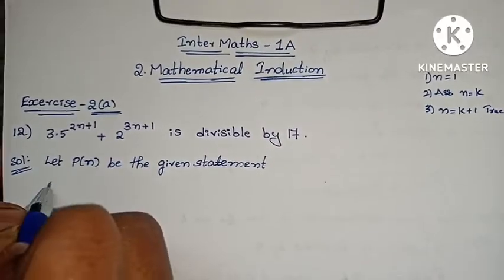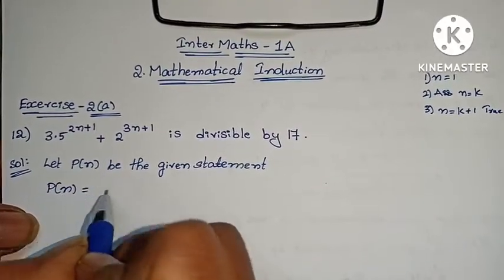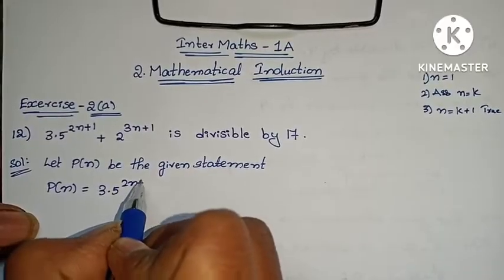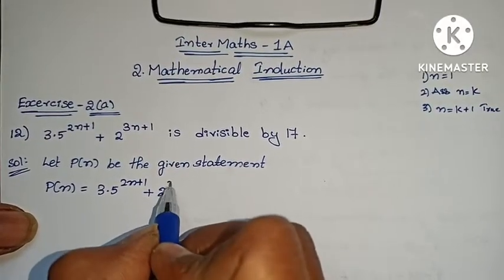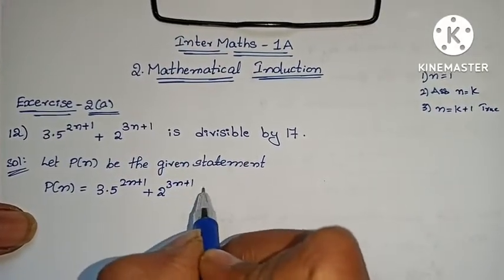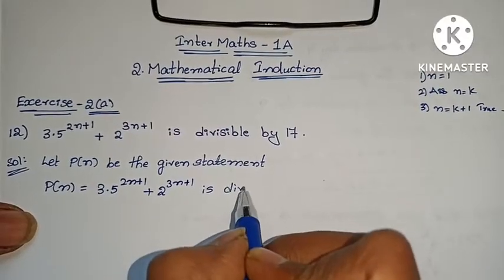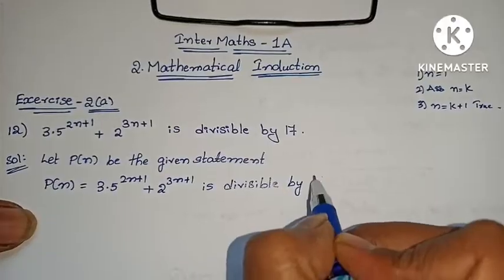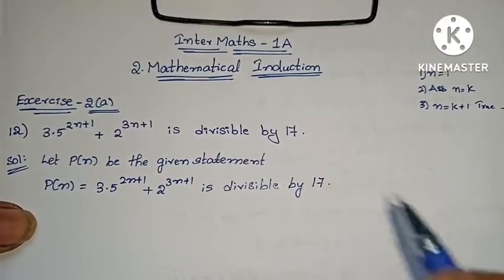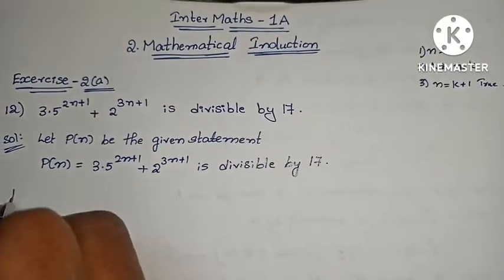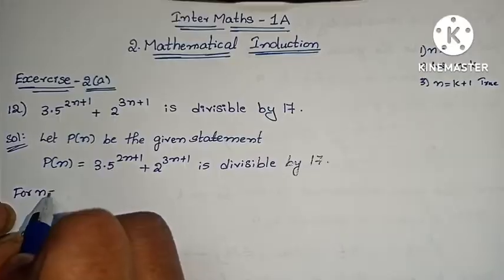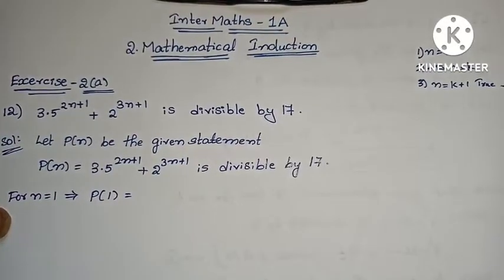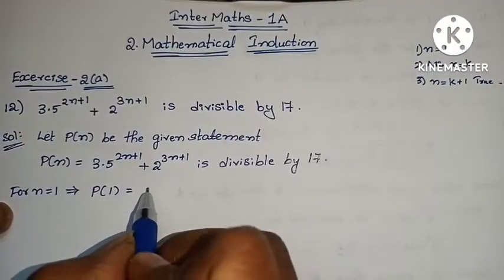P of n equals to 3 into 5 power 2n plus 1 plus 2 power 3n plus 1 is divisible by 17. For the first step, P of n equals to P of 1 — we substitute the value 1.